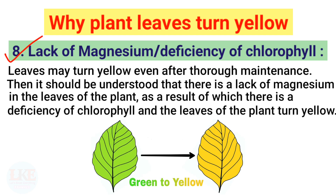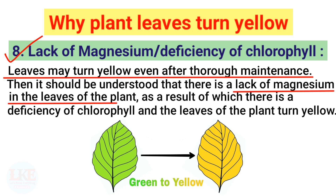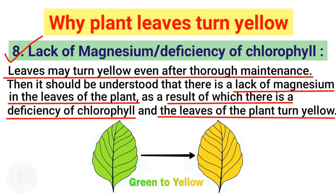Lack of magnesium — deficiency of chlorophyll. This is a very important point. Leaves may turn yellow even after thorough maintenance. Then it should be understood that there is a lack of magnesium in the leaves, which results in a deficiency of chlorophyll, causing the leaves to turn yellow. This point is important because a common question in competitive exams asks in whose absence tree leaves turn yellow — and the answer is chlorophyll.